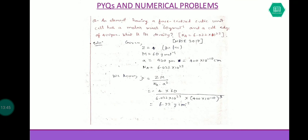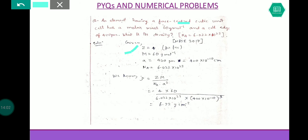Next: an element having a face-centered cubic unit cell has a molar mass of 60 g/mol and a cell edge of 400 picometers. What is the density? For FCC, z = 4. Molar mass is 60 g/mol. Edge length is 400×10⁻¹⁰ cm. Remember the conversions from picometers, nanometers, and angstroms to centimeters were covered in the previous video — see that first.